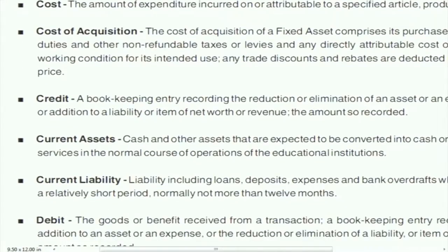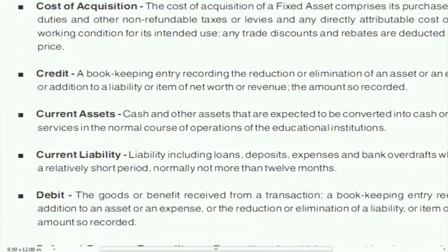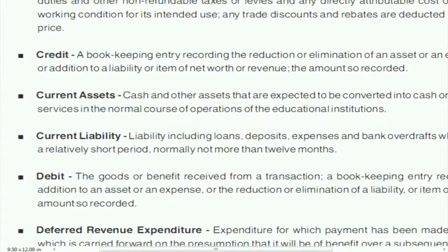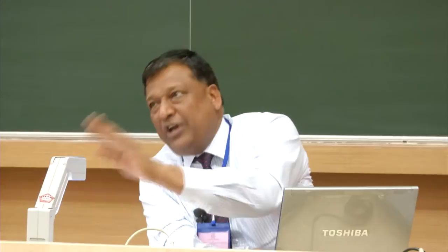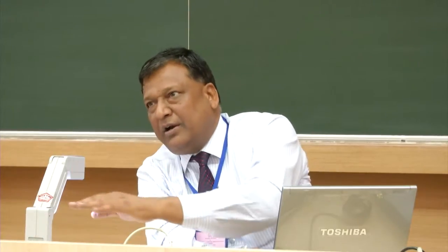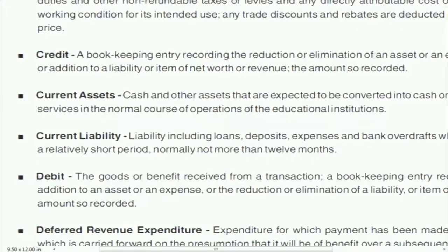Current asset means assets which are convertible within the next 12 months — either in cash, debtors, sales, or stock in trade. Raw material is current because it will be converted; finished goods will also convert. Current liability is payable within the next one year or the operating cycle.